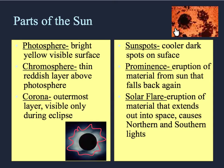Sunspots are cooler, darker spots on the surface of the sun. A prominence is an eruption of solar material that goes out and comes back again, whereas a flare is an eruption of solar material that goes out into space, and ultimately causes our northern and southern lights.